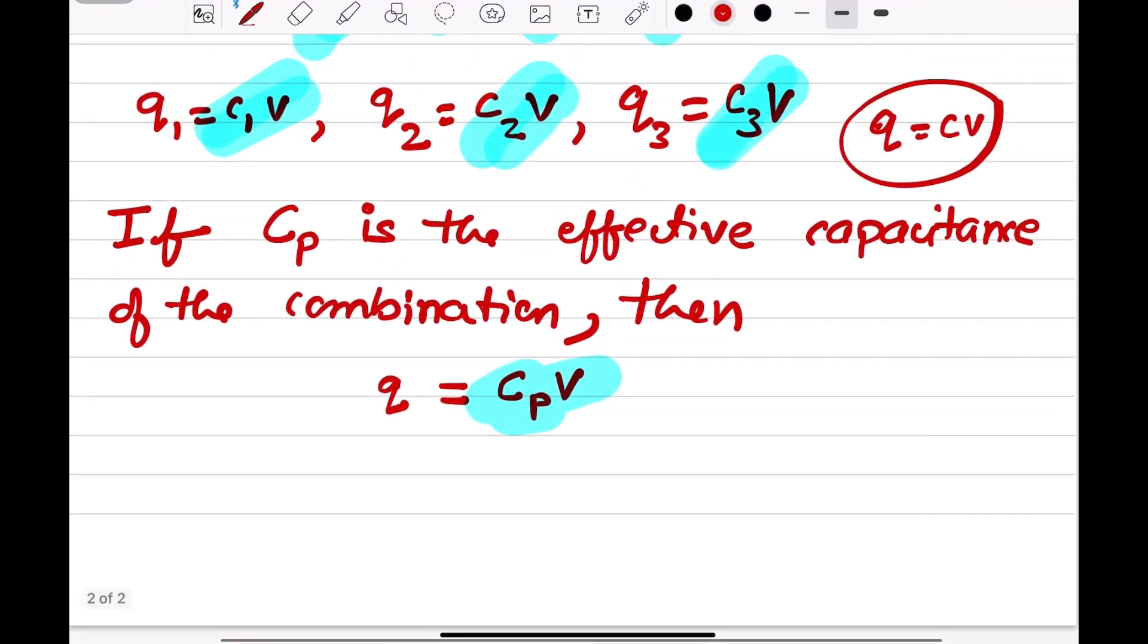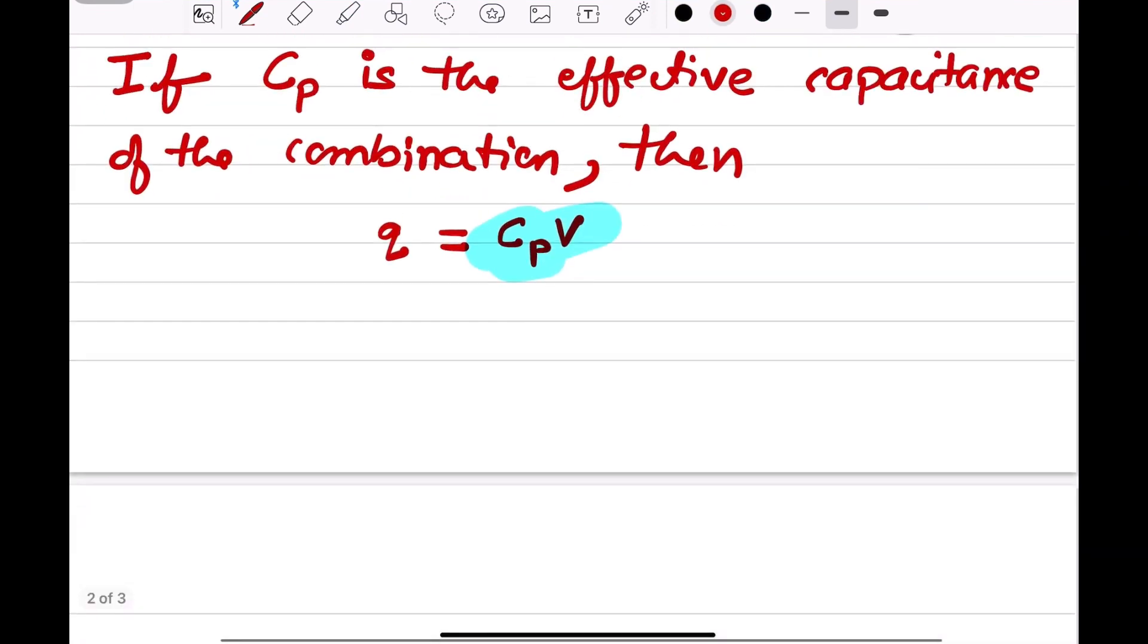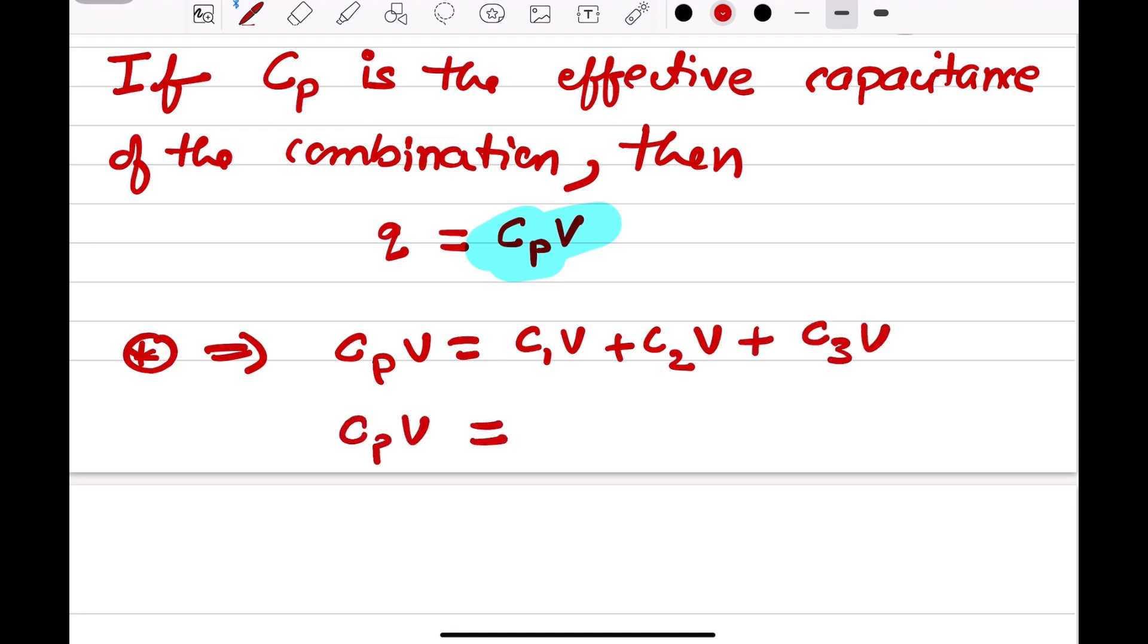So, what happens? Equation star implies CpV is equal to C1V plus C2V plus C3V. Or, V is common, Cp into V equals C1 plus C2 plus C3 into V. This V and V gets cancelled.